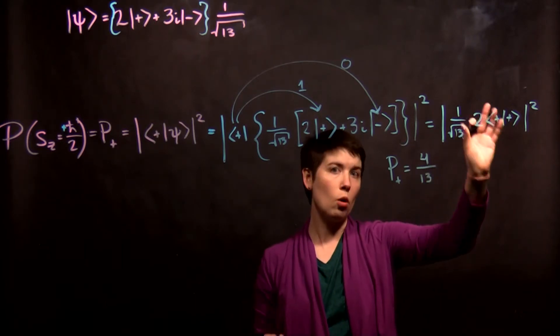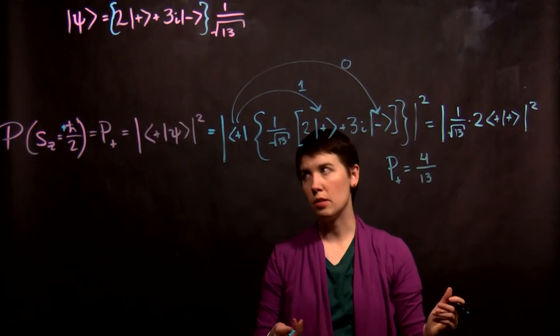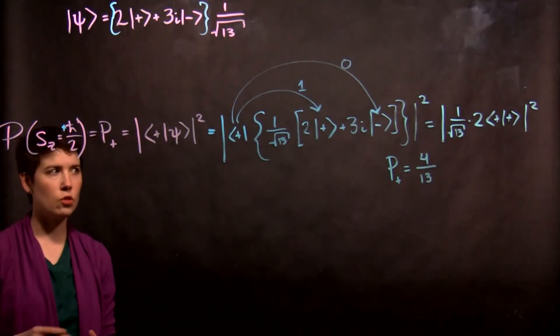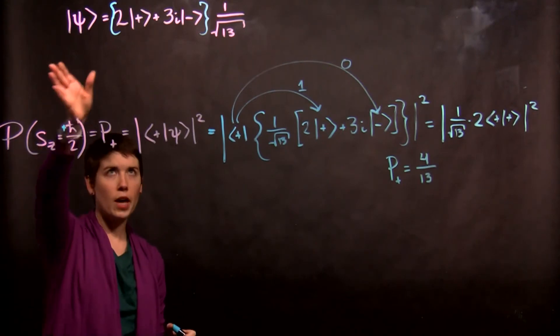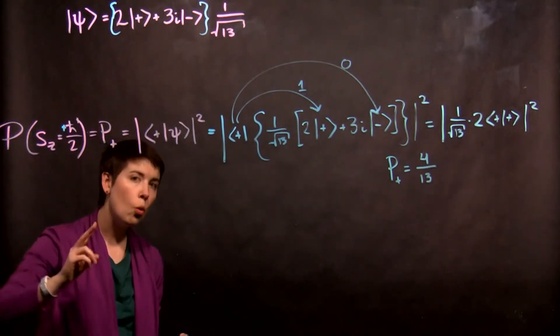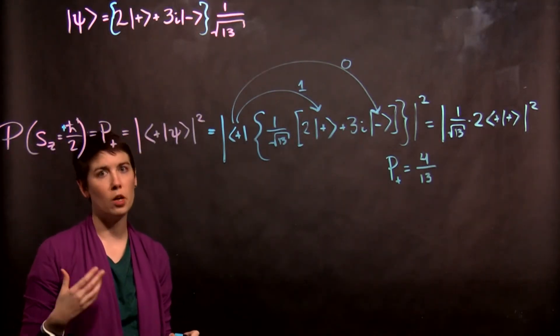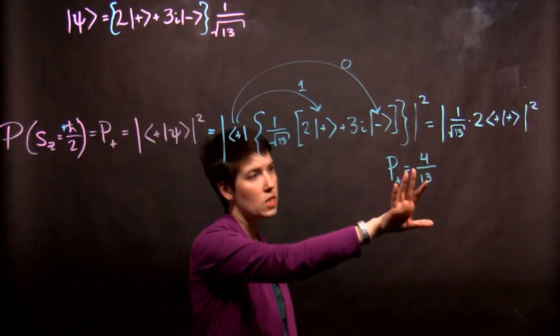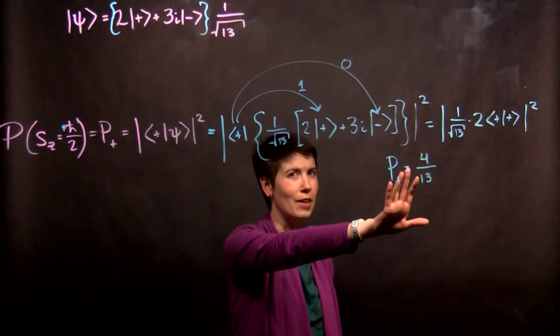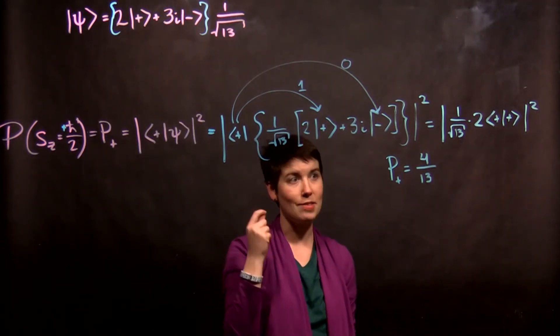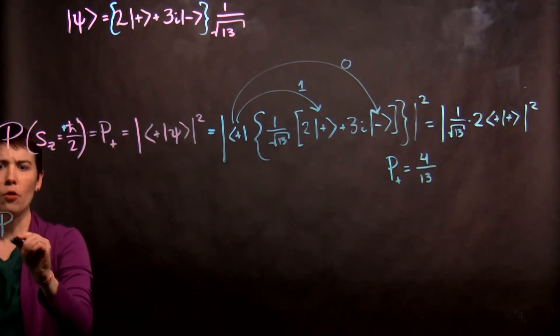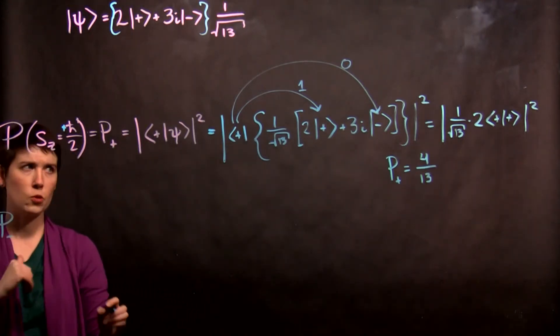Now this was all real, so magnitude squared was very simple. So now let's go through and do the other one. If this is, we have some quantum state, the only two possible measurements are spin-up and spin-down. They need to add to 1. So since 4 thirteenths of the probability is here in spin-up, we expect that our answer in spin-down is 9 thirteenths.